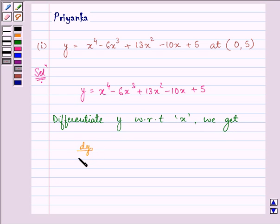dy by dx is equal to 4x cube minus 18x square plus 26x minus 10. Now we will find out the value of dy by dx at (0, 5).